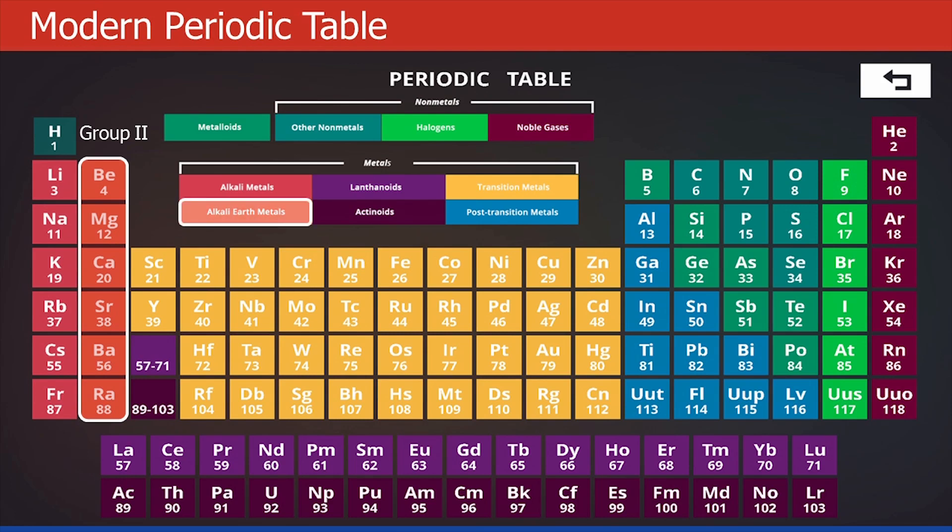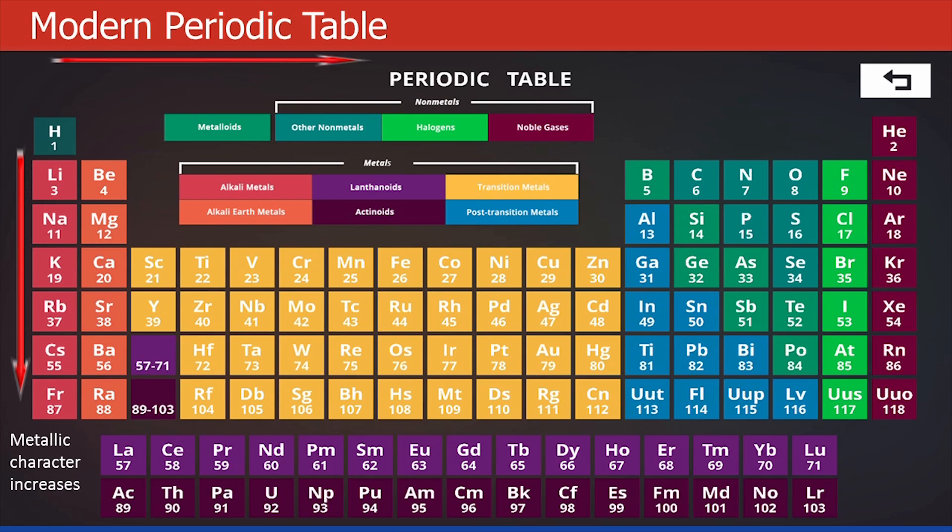Again, these metals are also very reactive. Now, an interesting property of periodic table. Please always remember this as a rule. Whenever we move from top to bottom in a group, the metallic character will always increase. And when we move from left to right in a periodic table, the metallic character will decrease.